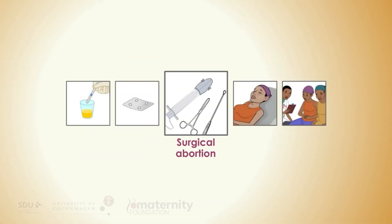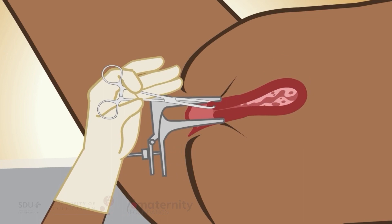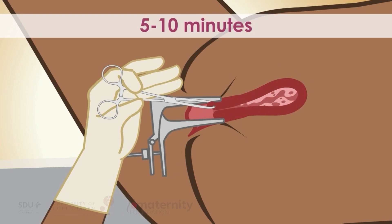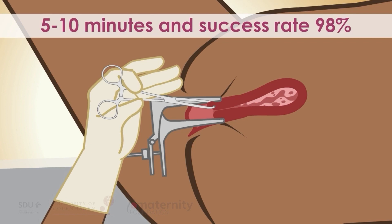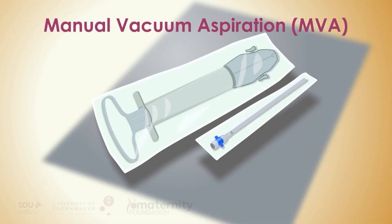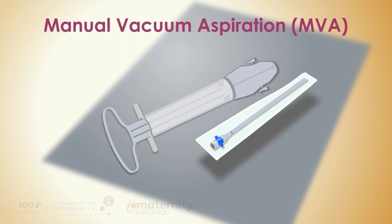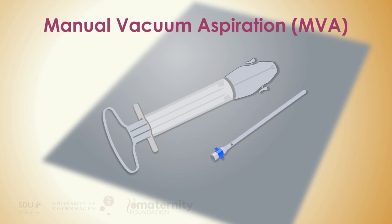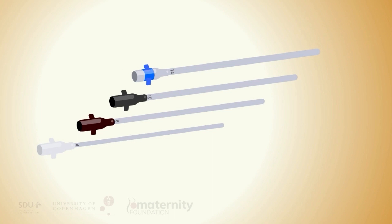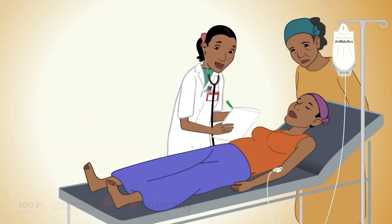Surgical abortion. Vacuum aspiration is the recommended technique of surgical abortion up to 12 to 14 weeks. This procedure takes only 5 to 10 minutes and is very effective and safe, with success rates over 98%. Manual vacuum aspiration uses a handheld aspirator to generate a vacuum. The aspirator is attached to cannulas ranging from 4 to 14 millimeters in diameter and can be used in multiple settings including those without electricity. The cannula diameter corresponds roughly to the gestational age of the pregnancy. Before you start the procedure, provide antibiotic prophylaxis to reduce post-procedure infection.